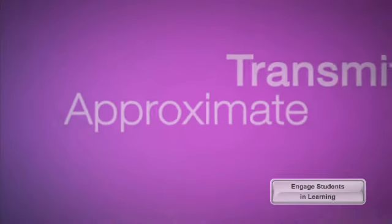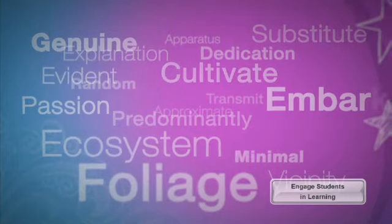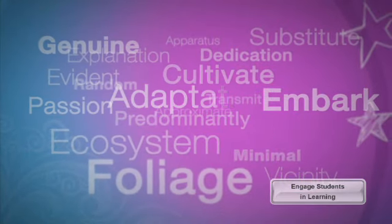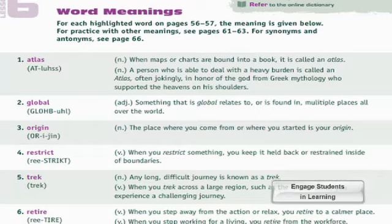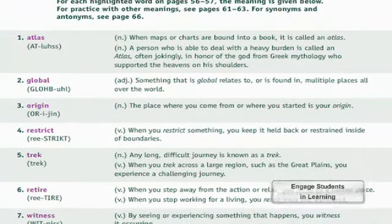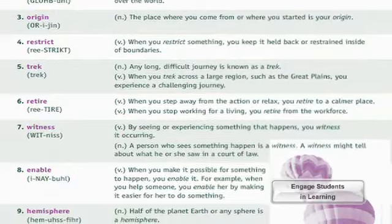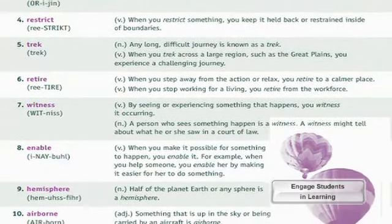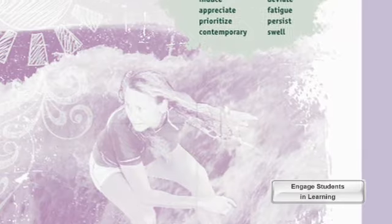One of the challenges around learning vocabulary is that there are just too many words to learn through direct instruction. The idea behind Vocabulary for Success is that there's a dual emphasis. We do teach about word meanings, but those words are chosen very selectively to help students unlock how to solve unknown words.